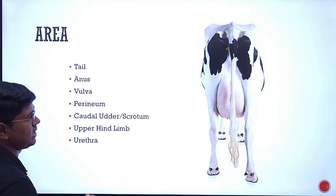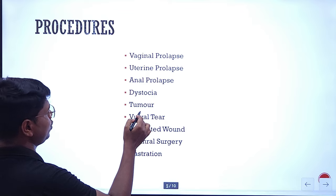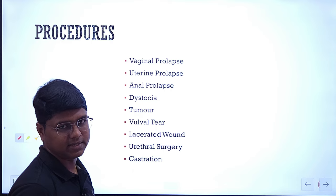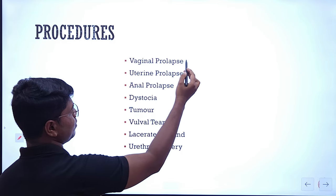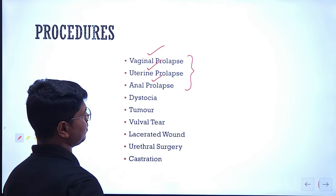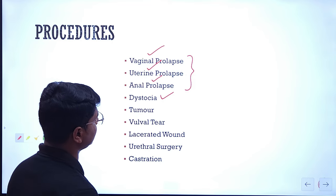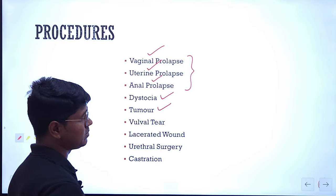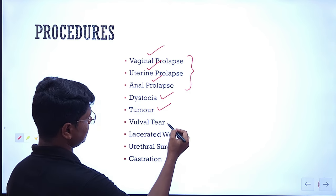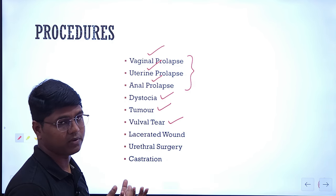This is the area which will be desensitized when you give epidural anesthesia. In which procedures will you need epidural anesthesia? Vaginal prolapse, all types of prolapse — whether vaginal, uterine prolapse, anal prolapse. In case of dystocia — difficulty in the birth process. Tumor surgery, sometimes you will find vulval tumors or skin tumors around the perineal region. Vulval tear — sometimes animals which may go for grazing might have injuries through barbed wire or fencing.